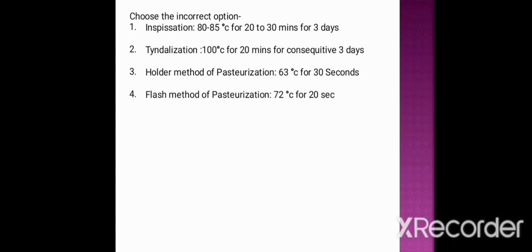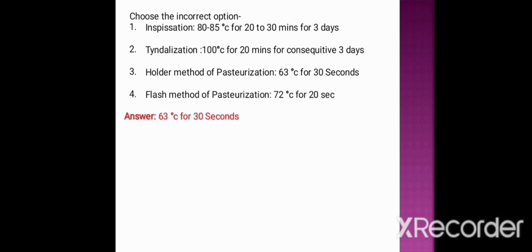Next question: choose the incorrect option — that is, the false statement. Different methods of sterilization with their temperature and holding time are listed. Option one: inspissation — 80 to 85 degrees centigrade for 20 to 30 minutes for three consecutive days. Option two: tindalization — 100 degrees centigrade for 20 minutes for three consecutive days. Option three: holder method of pasteurization — 63 degrees centigrade for 30 seconds. Option four: flash method of pasteurization — 72 degrees centigrade for 20 seconds. The answer is option three: 63 degrees centigrade for 30 seconds.